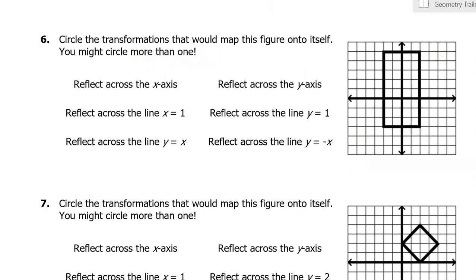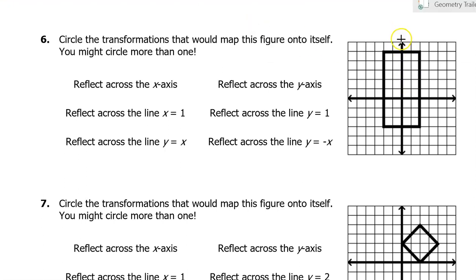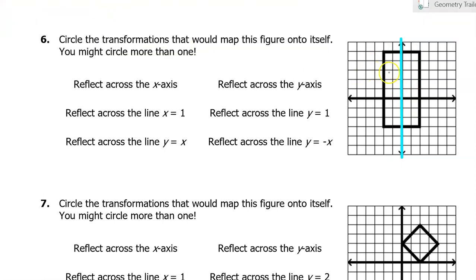Let's do that again with a different shape. Let's start by identifying the obvious lines of symmetry. This line — can you see that it splits the rectangle right down the middle? The left side and the right side are mirror images of each other. So yes, if I reflect over this line, it will map the figure onto itself. This is, of course, the Y axis. So reflecting across the Y axis — we will definitely circle that.